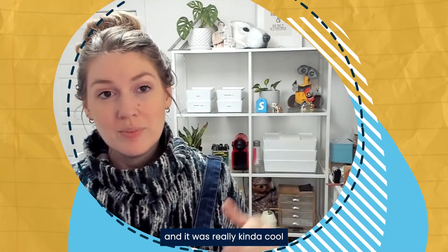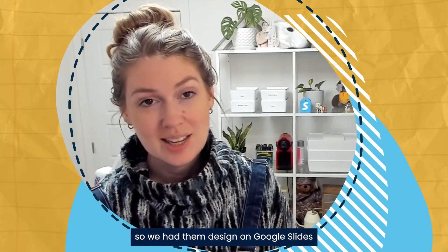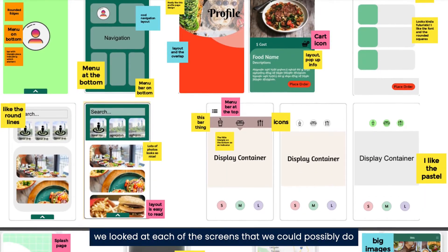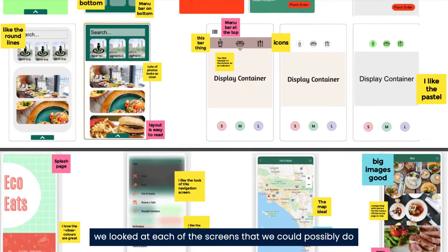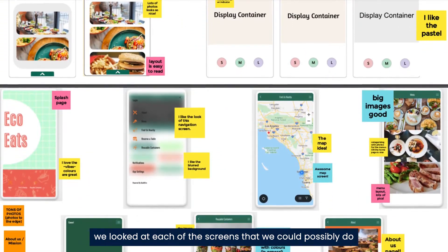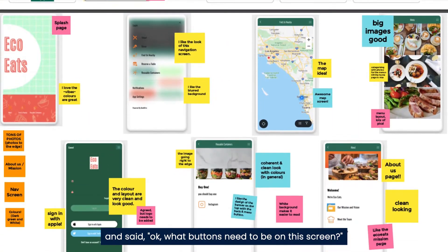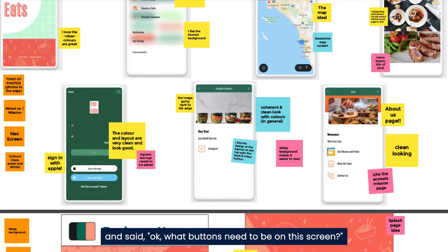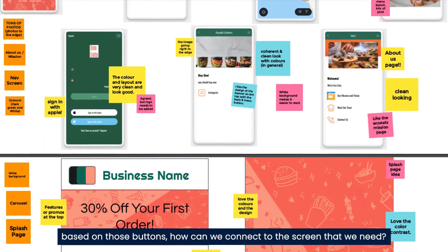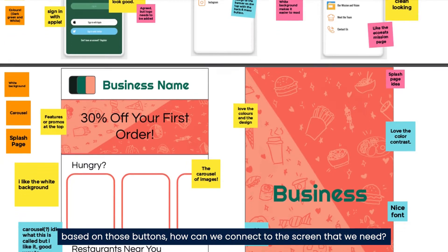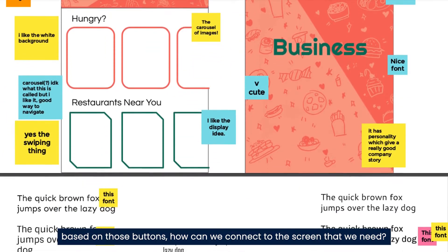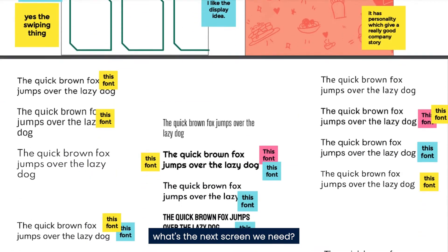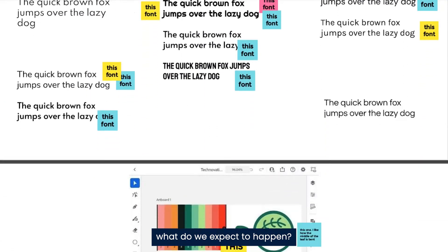We had them designed on Google Slides. We looked at each of the screens we could possibly do and said, okay, what buttons need to be on this screen? Based on those buttons, how can we connect to the next screen we need? What's the next screen we need?